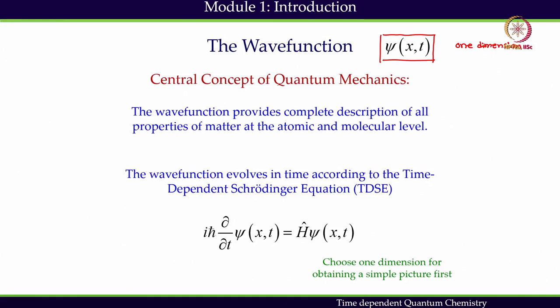To get the fundamental ideas clear, we will continue with one dimension. This wave function in quantum mechanics provides a complete description of all properties of matter at a given time and gives information about a matter's dynamical observables. From quantum mechanics we get this wave function, and from the wave function we will be able to calculate dynamical observables.